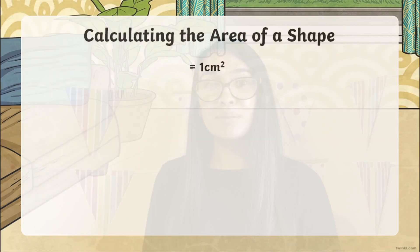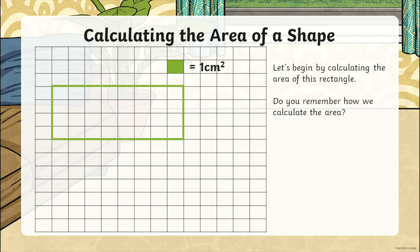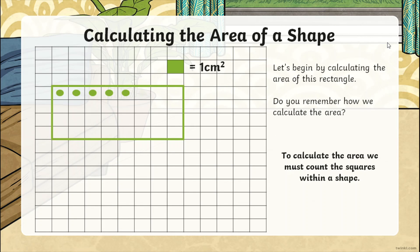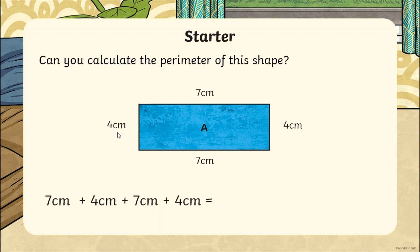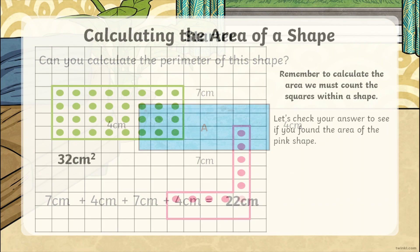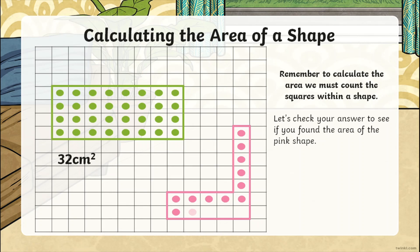In this lesson, Selena takes children through how to calculate the area of squares, rectangles and shapes by counting the number of squares within the shape. The lesson begins with a recap of how to calculate perimeter before moving on to calculating the area of shapes drawn on one centimetre squared paper.